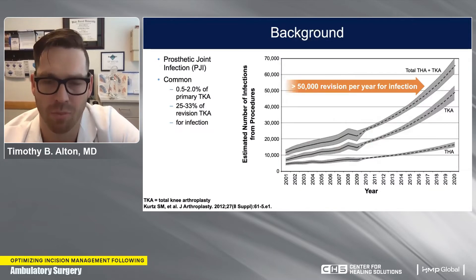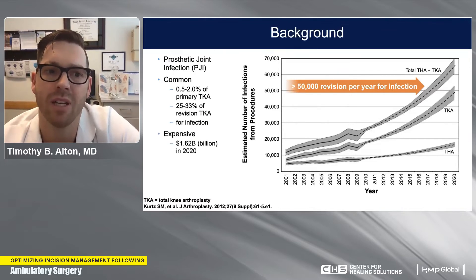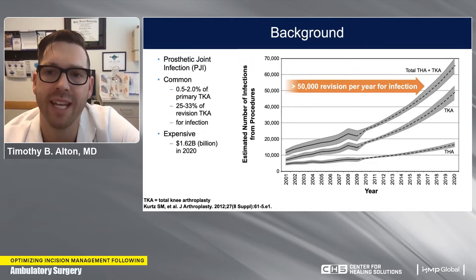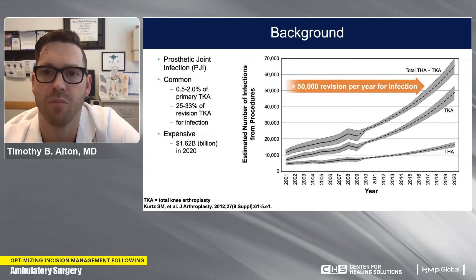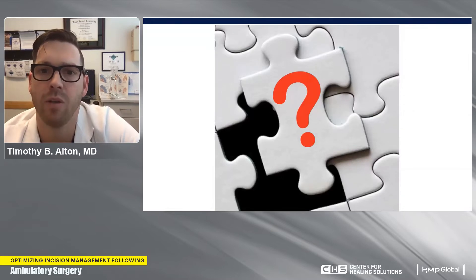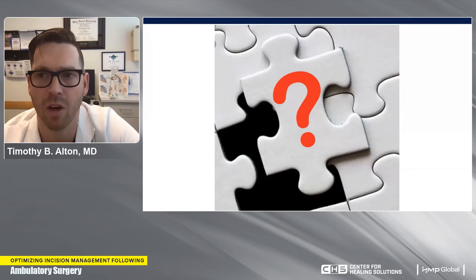Infections are a common source of cost for the healthcare system and a high reason why we revise hip and knee replacement surgeries. The estimated cost is $1.6 billion to the healthcare system in 2020. The rates of primary hip and knee replacement surgeries are going up, so there's risk for more and more infections moving forward. Negative pressure dressings may not be the only piece to the puzzle, but I think they are a key piece.